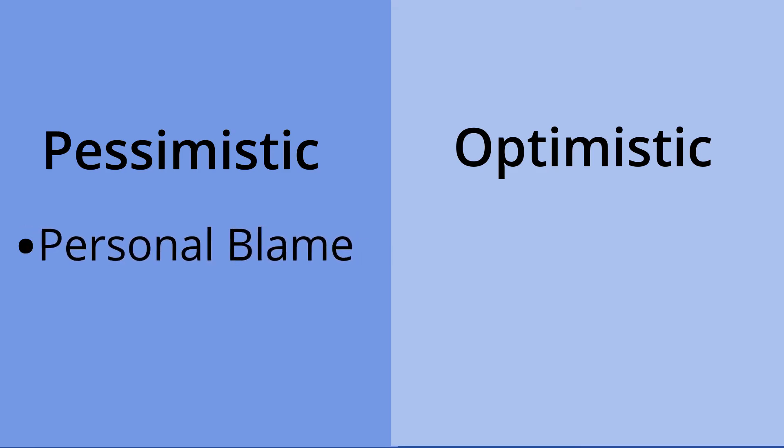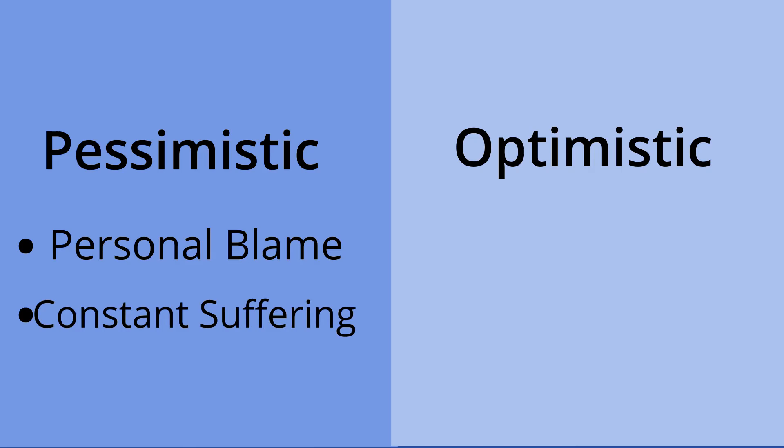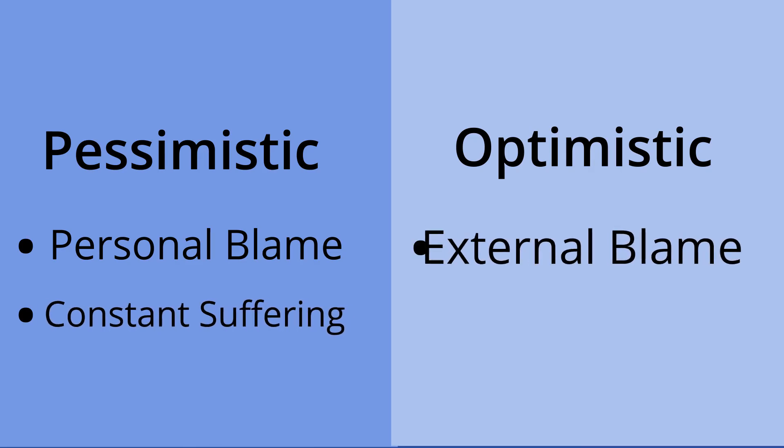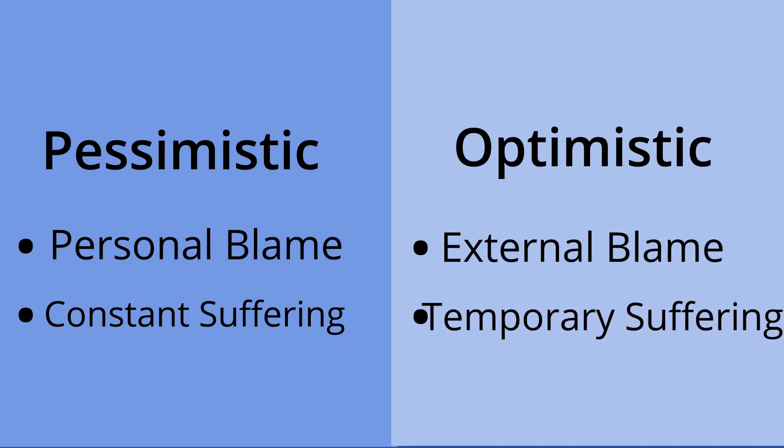A pessimistic explanatory style involves personal blame for bad outcomes and beliefs that such suffering is permanent and pervasive. Meanwhile, an optimistic one involves external blame for negative events and beliefs that such suffering is temporary and local.